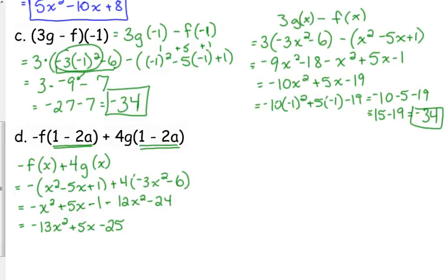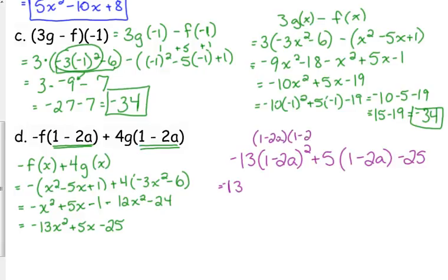Now, I'm going to plug in the 1 minus 2A everywhere I see X. So, 1 minus 2A squared is 1 minus 2A times 1 minus 2A. When we foil that out, first gives us 1. The outside and the inside both give us negative 2A. So, when we combine those, we get negative 4A. And, the last gives us positive 4A squared.